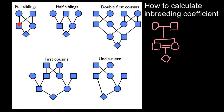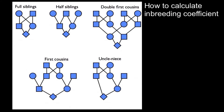The father gives 50% of his genes to this child and the mother also gives 50% of her genes to this child. So this is exactly the same picture as we have here. In order to find the inbreeding coefficient, we just have to specify the pathway for this child — how he is going to get his genes from his ancestors. Here we have two ancestors.